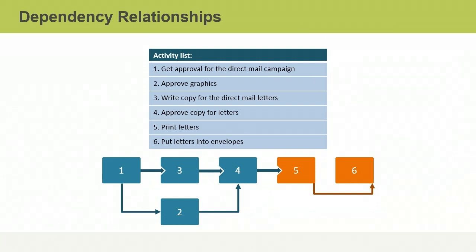It's possible the team could start activity 6 before activity 5 is completed. However, activity 6 can't be finished until activity 5 is finished, so you add an arrow to represent a finish-to-finish relationship between the last two activities.